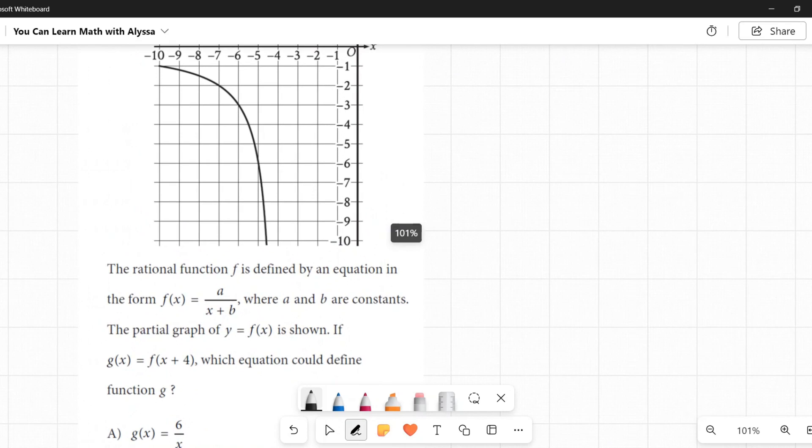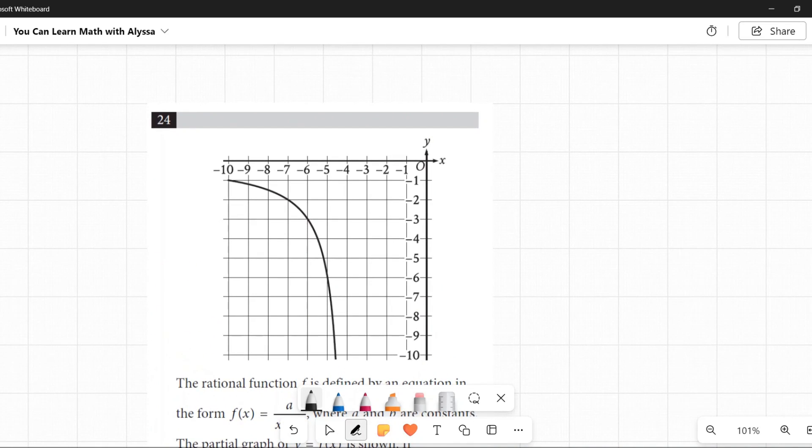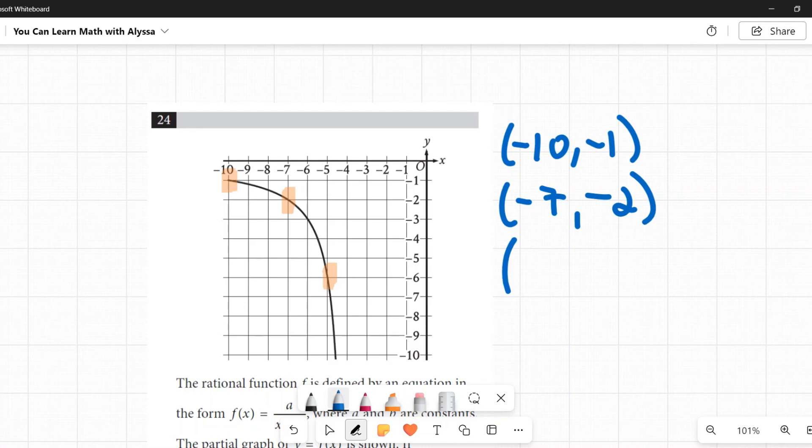So I need to figure out a and b. Now if I look at this graph, I look at this graph, and there are some points that pretty clearly are on this function, like right here at negative 10, negative 1. Right here at negative 7, negative 2. There at negative 5, negative 6. I think those three points we can say pretty confidently they are on this function. So I'm going to say negative 10, negative 1, negative 7, negative 2, and negative 5, negative 6.